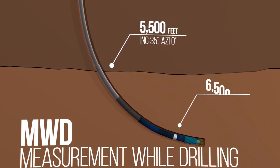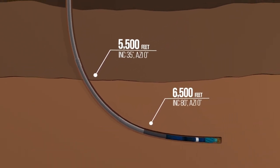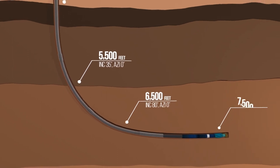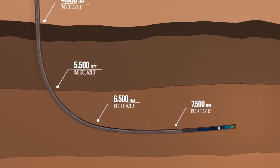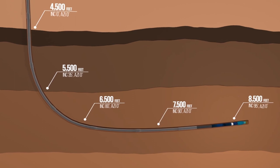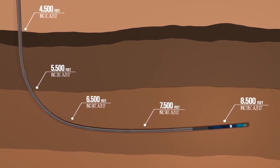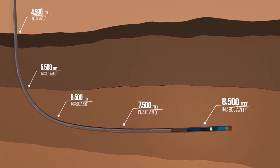The measurements help us determine the orientation of the drill bit, which lets us determine the position of the wellbore and steer the well. These measurements are actively taken while the well is being drilled.